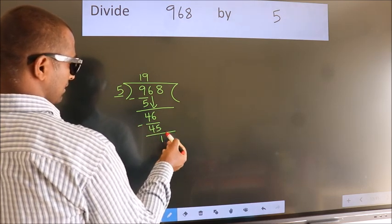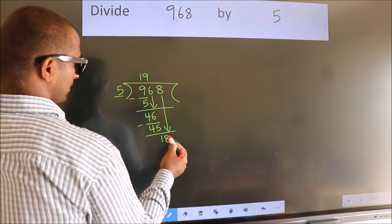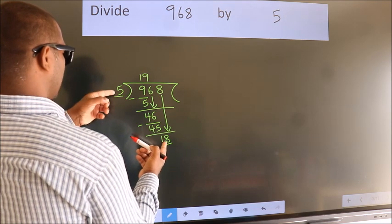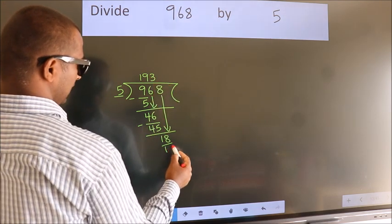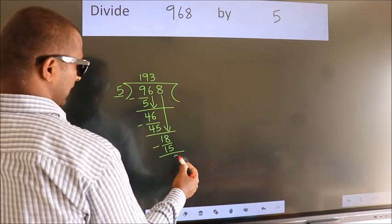After this, bring down the beside number. So, 8 down. So, 18. A number close to 18 in 5 table is 5 threes 15. Now, we subtract. We get 3.